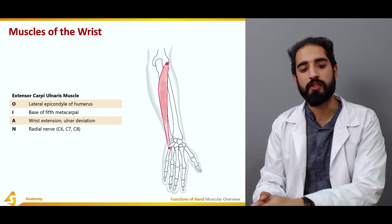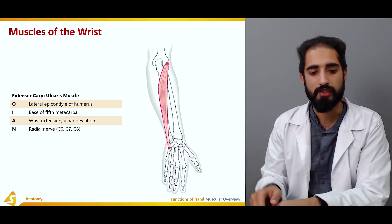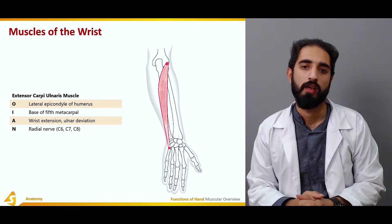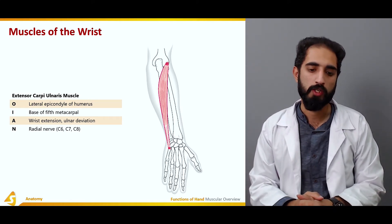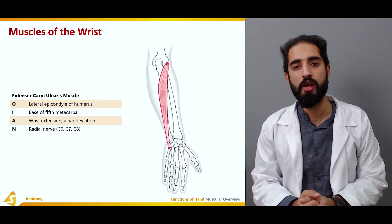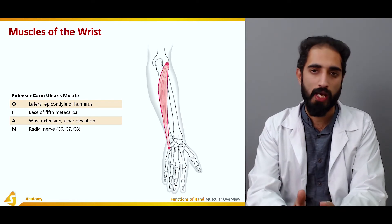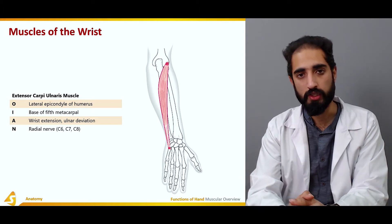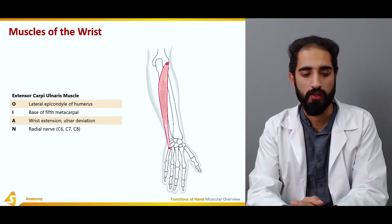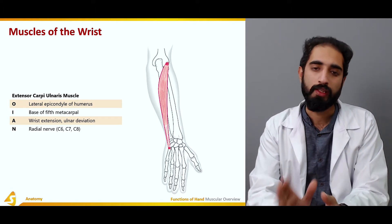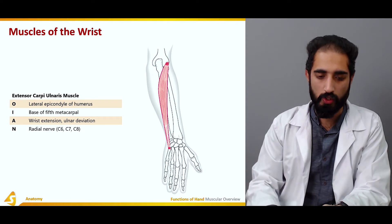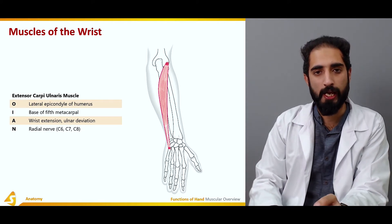The extensor carpi ulnaris arises from the lateral epicondyle of the humerus but shifts toward the medial side and inserts at the base of the fifth metacarpal. For this reason, it is involved not only in wrist extension but also in ulnar deviation. The nerve supply for all three extensors is the radial nerve, with nerve roots C6, C7, and C8.